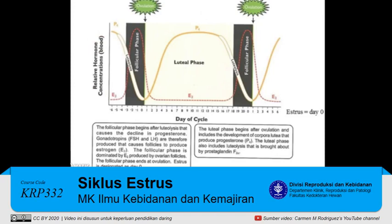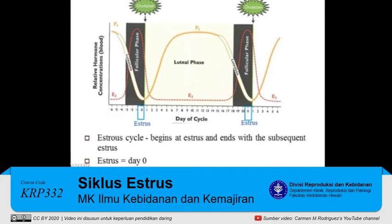Figure 7-2 is a graphical representation of the events that occur during the follicular phase and the luteal phase of the estrus cycle. Remember that each estrus cycle begins at estrus and ends with the subsequent estrus. In this figure, day 0 represents estrus. Estrus (E-S-T-R-U-S) is the time when the female is receptive to the male.